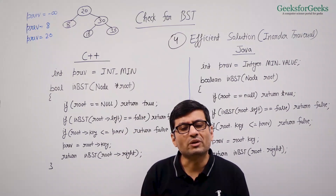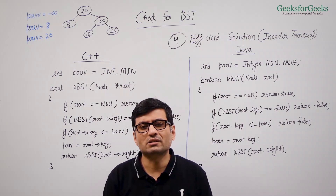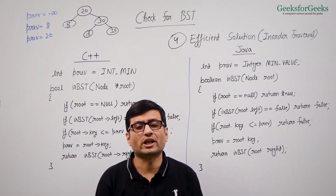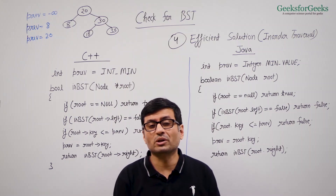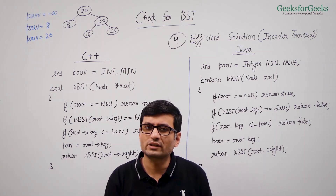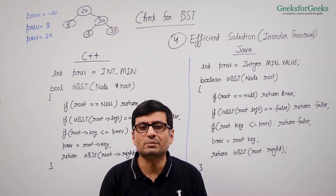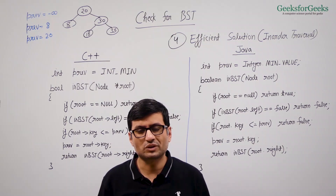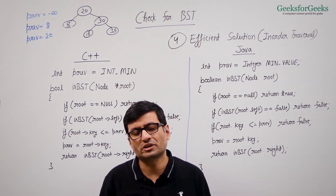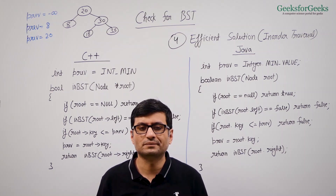The time complexity of this inorder-based solution is O(n), since it does a simple inorder traversal. The auxiliary space required is O(h), where h is the height of the given tree — the same as the space used by inorder traversal.